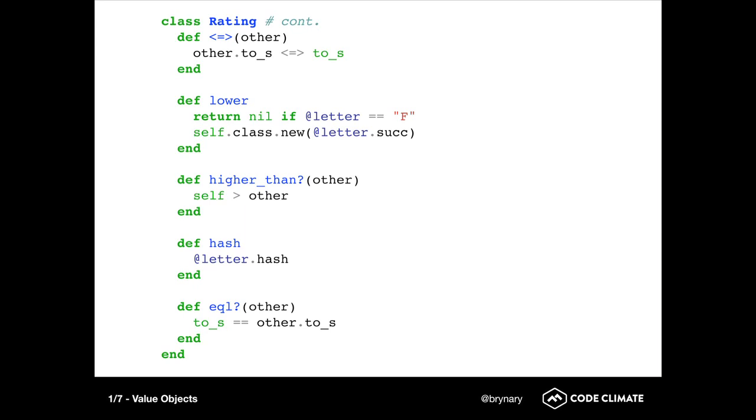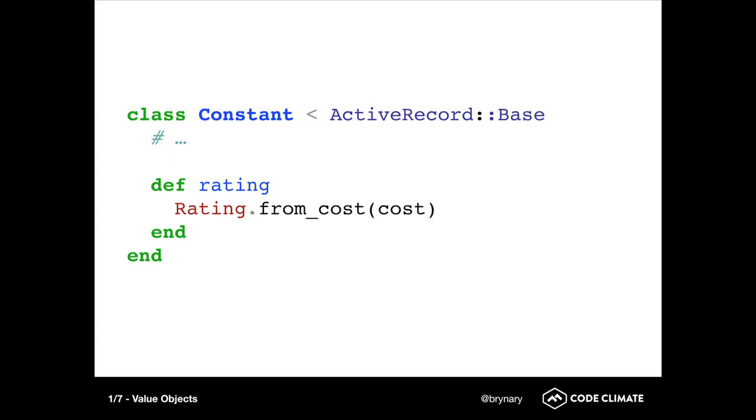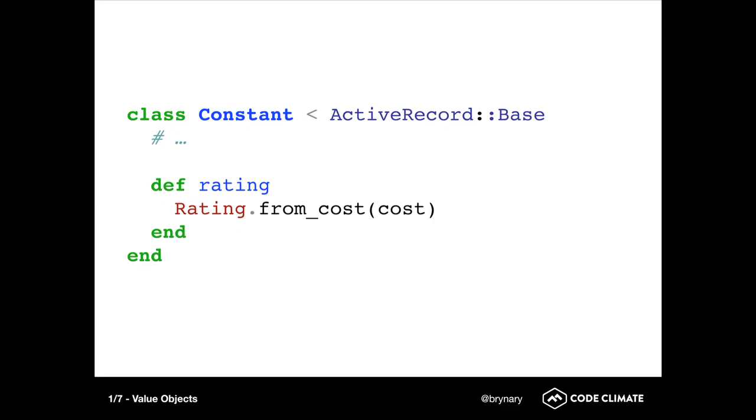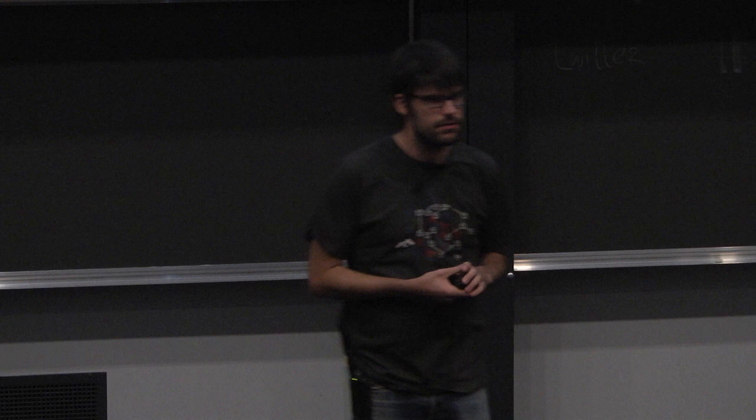We can ask a rating what the next worst rating is, so B will give you C, C will give you D. You can have expressive predicate methods like, is this rating better than or worse than the other? And you can also define equal and hash, so now we can use ratings as keys in plain Ruby hashes, which is quite useful for us because we group classes by their rating in a number of places. And it's very easy to use. You just define a method inside of your ActiveRecord class, which instantiates the value object.